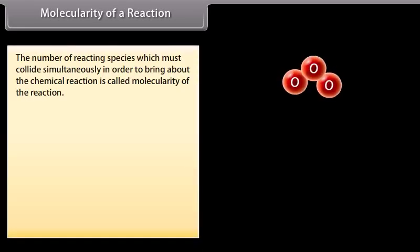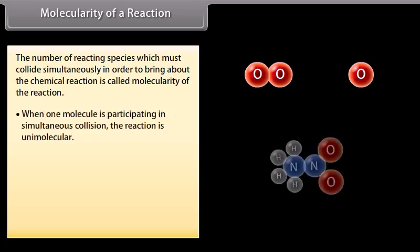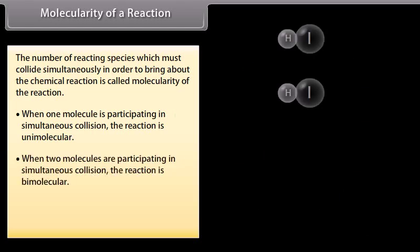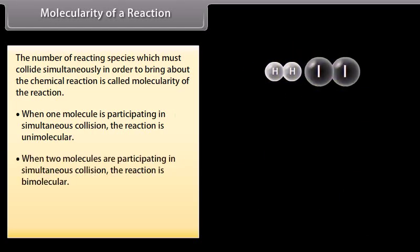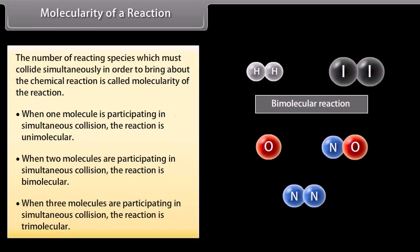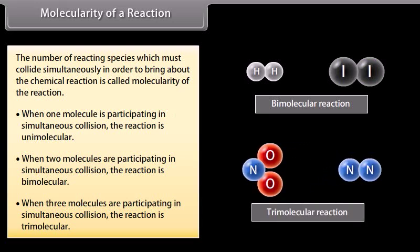The number of reacting species which must collide simultaneously in order to bring about the chemical reaction is called the molecularity of the reaction. When one molecule is participating in simultaneous collision, the reaction is unimolecular. When two molecules are participating, the reaction is bimolecular. When three molecules are participating, the reaction is trimolecular. Molecularity of a reaction is always a whole number.